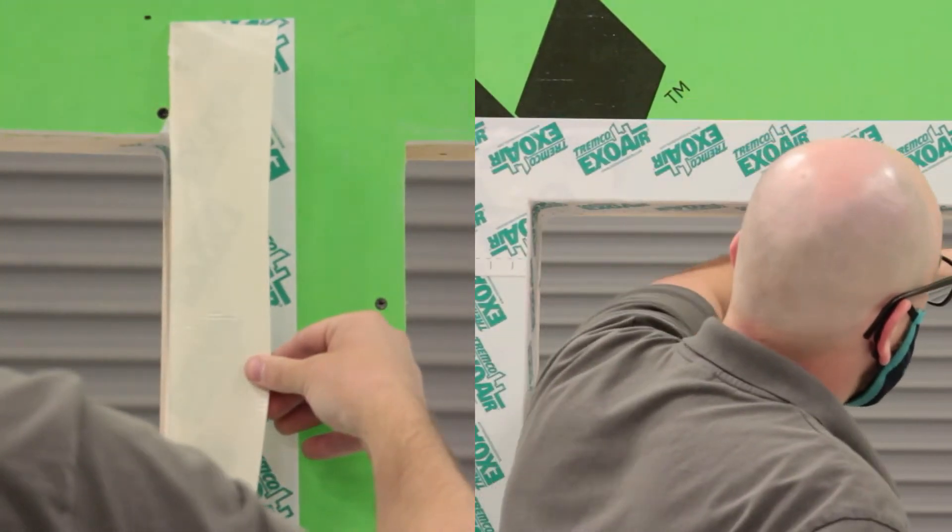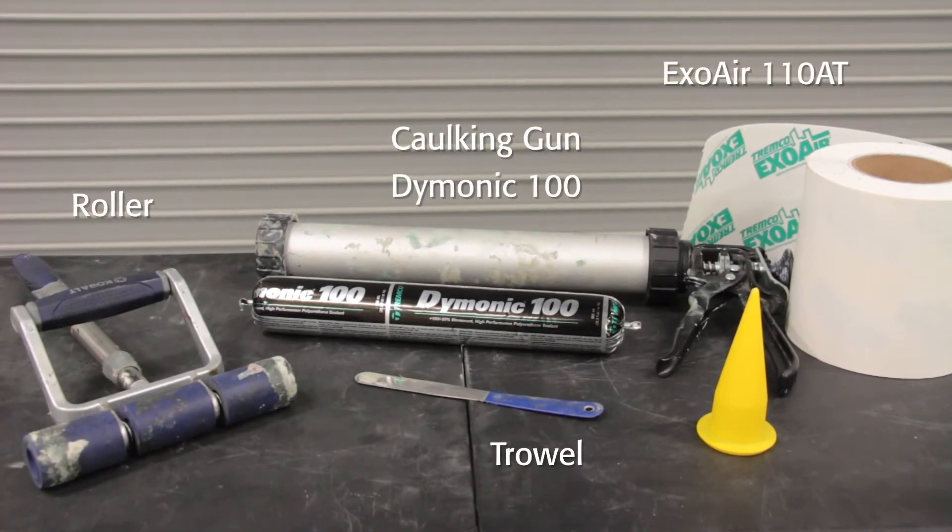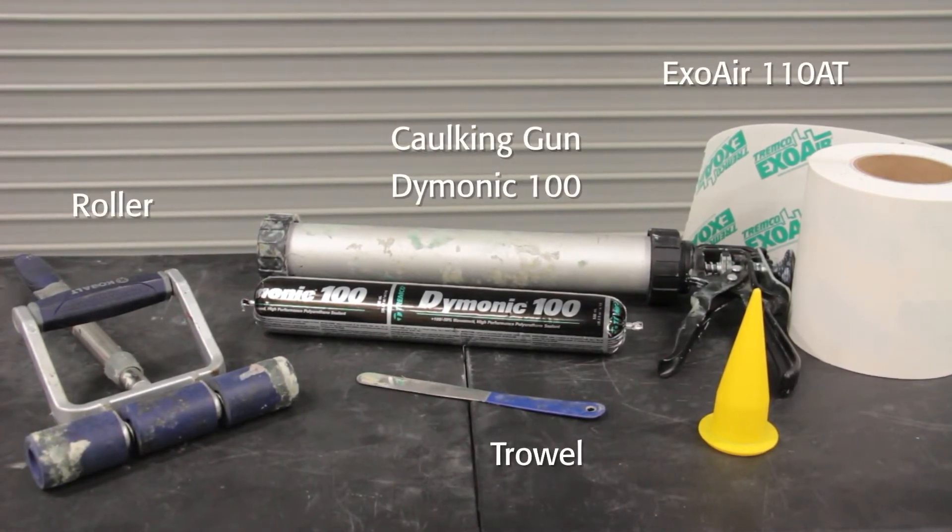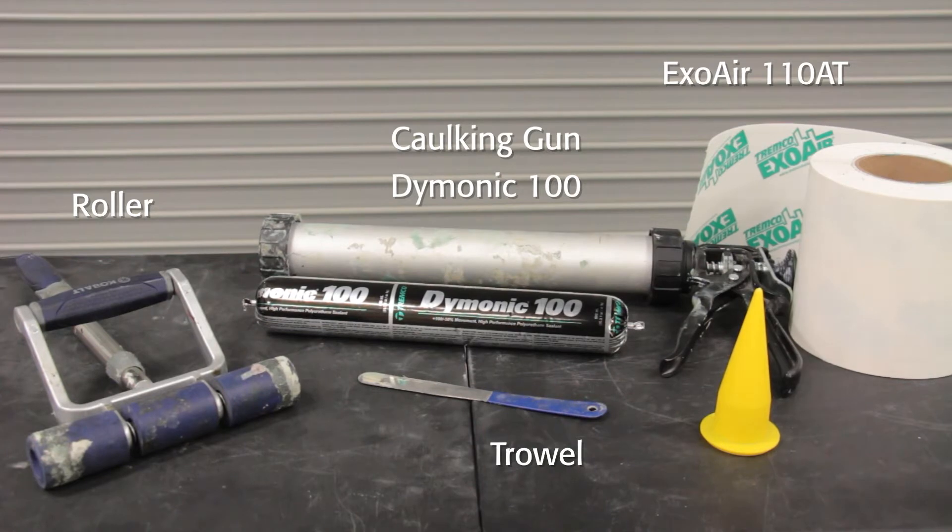For this application, you will need the rolls of ExoAir 110AT in the appropriate width, a caulking gun, Deimonic 100 urethane sealant, a small trowel, and a roller.